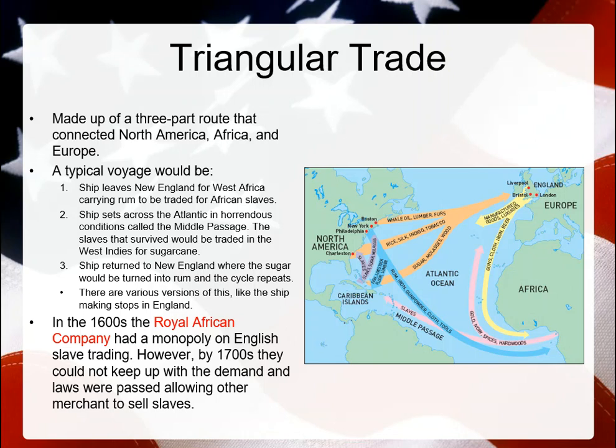Ships were sent across the Atlantic in horrendous conditions called the Middle Passage. That's when they stacked as many African slaves as they could in that ship, knowing that around 30% or so would probably die under those conditions. It was horrific. The slaves that survived would be traded in the West Indies for sugarcane, and then ships returned to New England, where the sugar would be turned into rum and the cycle would repeat.